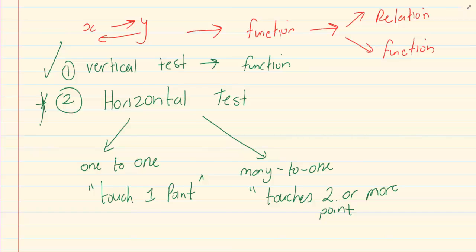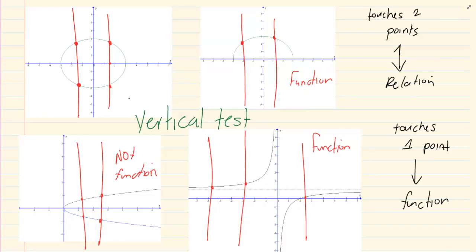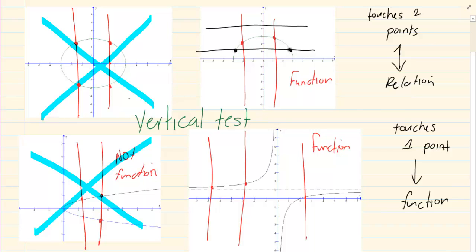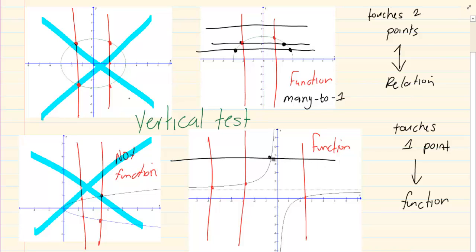Now let us go back to our drawings. Clearly this one failed the vertical test and this one failed — so those are not functions, and if you fail the first test you can't continue to the second. Now for the second test we draw a horizontal line through the diagram. It is touching two points — again touching two points — which means even though it is a function, the type of function it is is many-to-1. Now let's do the horizontal test on the other graph: one point, one point, one point — so this is a function and it is 1-to-1.